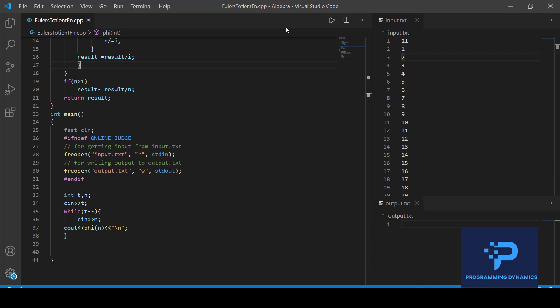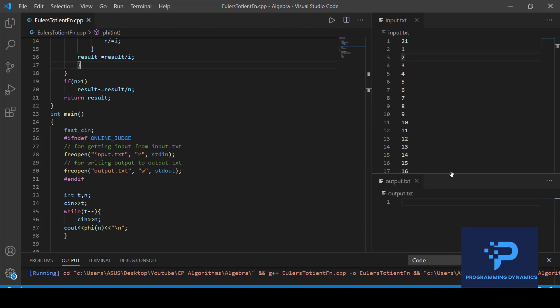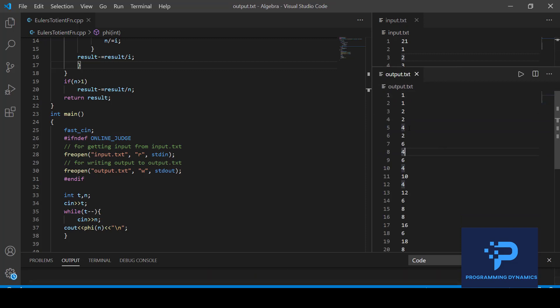So if I run this program I should be getting the exact values of phi of n which is phi of 1 equal to 1, phi of 2 equal to 1, phi of 3 equal to 2 and if you remember you can go back to the first screen in which I showed the variable values and all these values match exactly the same.